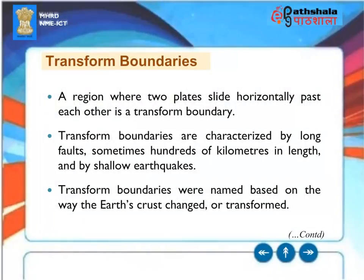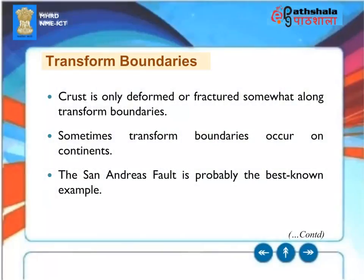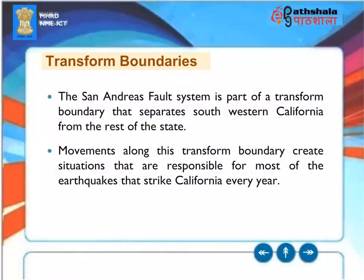A region where two plates slide horizontally past each other is a transform boundary. Transform boundaries are characterized by long faults, sometimes hundreds of kilometers in length, and by shallow earthquakes. Crust is only deformed or fractured somewhat along transform boundaries. Sometimes transform boundaries occur on continents — the San Andreas Fault is probably the best-known example. The San Andreas Fault system is part of a transform boundary that separates southwestern California from the rest of the state, and movements along this boundary are responsible for most of the earthquakes that strike California every year.